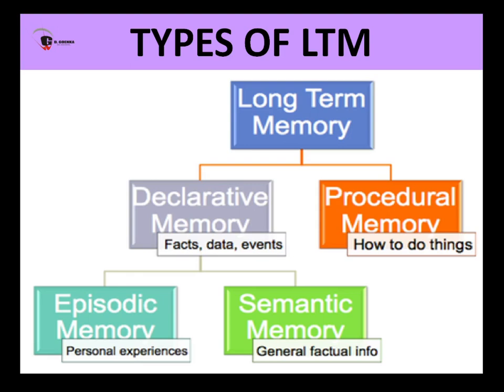And then coming to the next type, which is semantic memory — which we shared right in the beginning that declarative memory can either be episodic or semantic. Semantic memory actually pertains to your general awareness and knowledge. All the various concepts, the ideas, the rules — all of that is getting stored in the semantic memory.